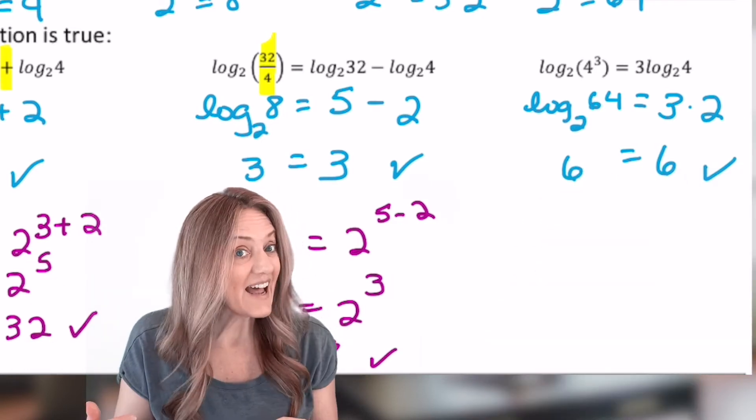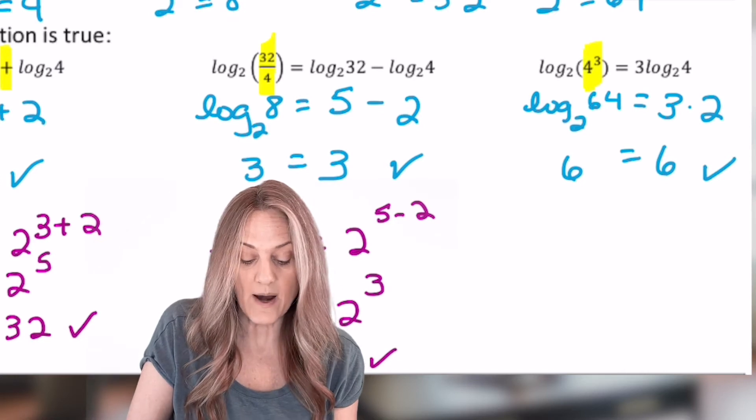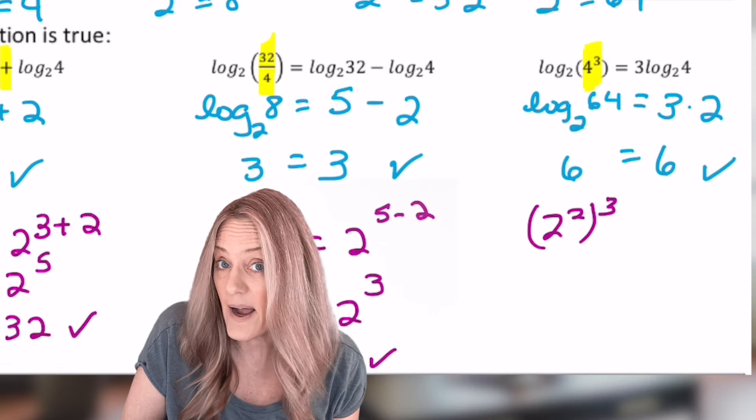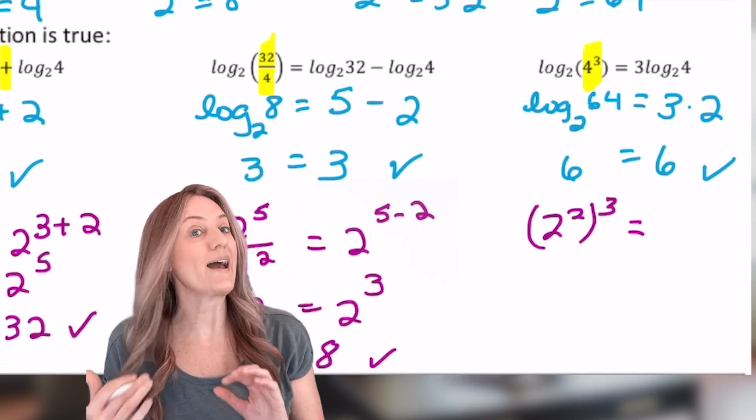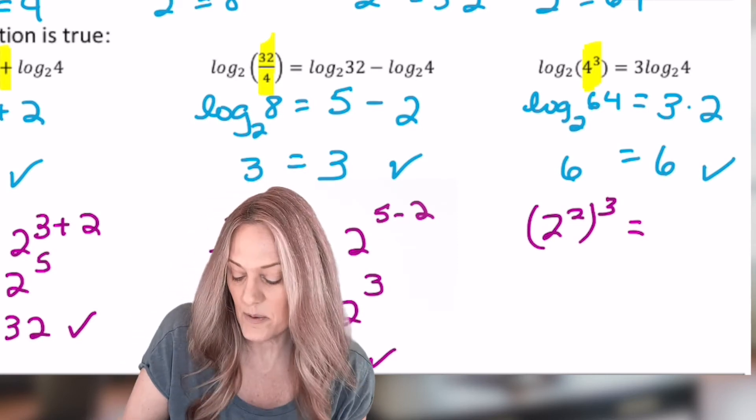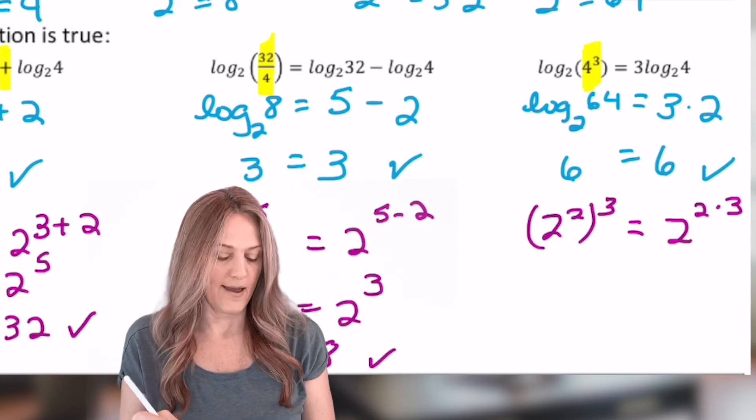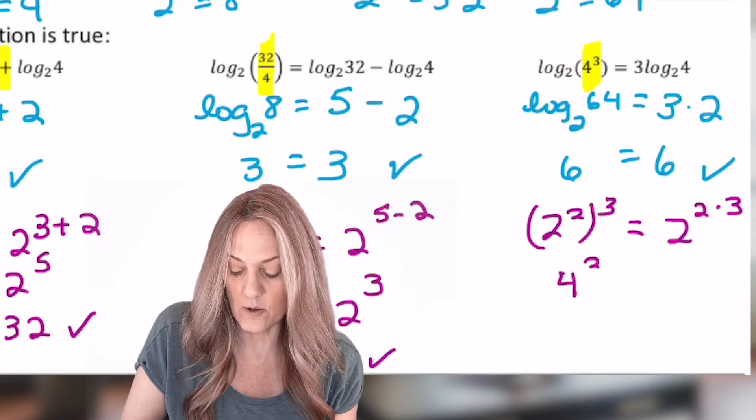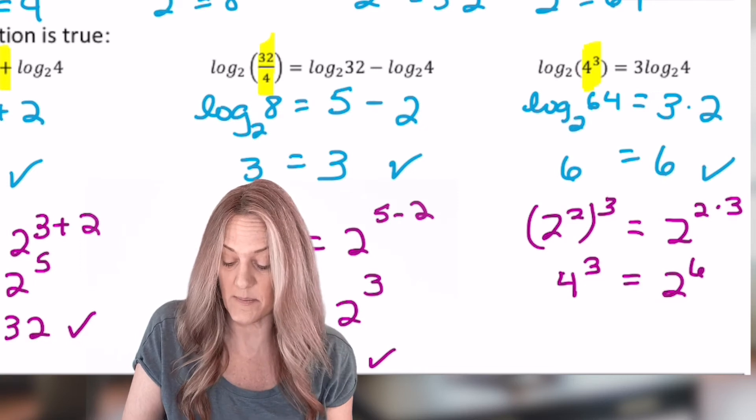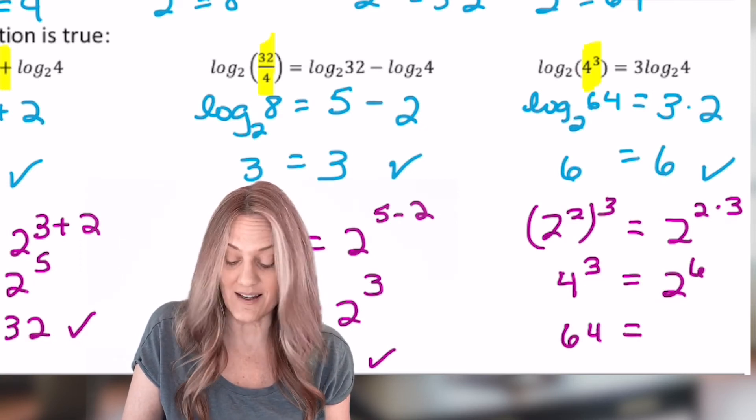Let's go exponential on that last example. So we have 4 cubed. I'm going to go ahead and rewrite that as 2 squared raised to the 3rd power, which then we know exponential rules close by multiply. So it will be 2 to the 2 times 3. Okay, then we have 4 cubed on the left-hand side. On the right-hand side, 2 to the 6th power. 4 cubed is 64. 2 to the 6th is 64.